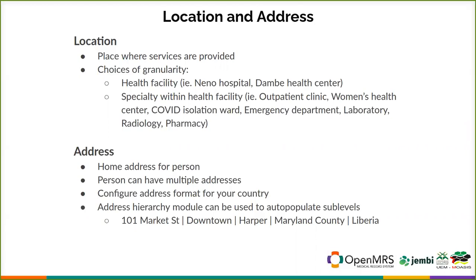Addresses, which in OpenMRS are a separate table from locations, are normally home addresses for a person — whether the patient themselves, a community health worker, or a contact for a patient. A person can have multiple addresses. OpenMRS is flexible so you can configure the address format for your country. For example, in Liberia you'd have street, neighborhood, city, county, and country. In Mozambique you'd likely have a different address hierarchy, and in the United States we have things like zip codes and states.